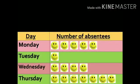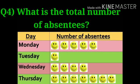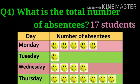Here is the last question: what is the total number of absentees? To find out the answer, we need to count all the smileys together. The total smileys are 17. So the answer is 17 students were absent in all.